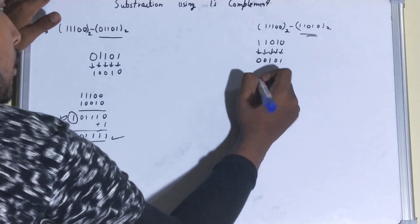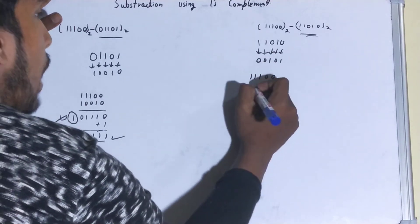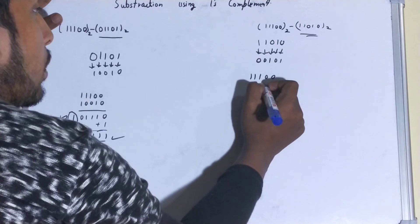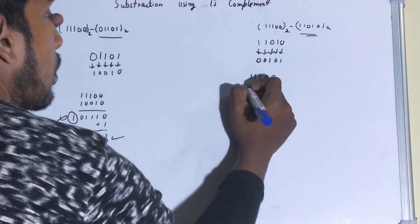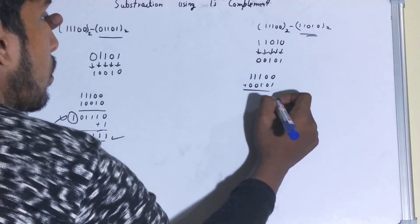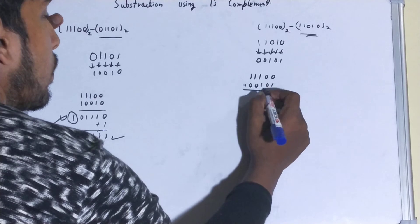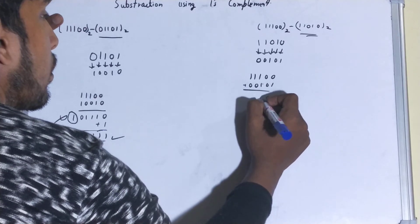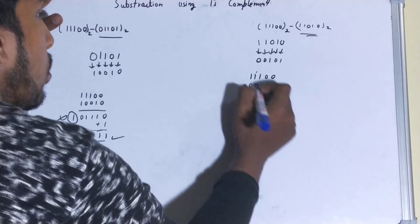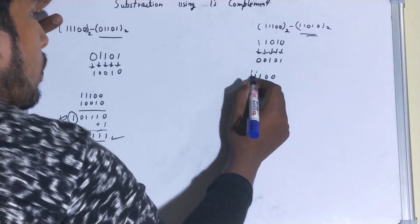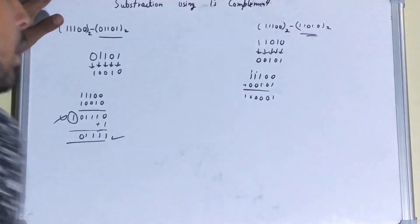Then we add it to the original number. So: 1 + 0 = 1, 1 + 1 = 0 with carry, 1 + 1 = 0 with carry, and 1 + 1 = 0 with carry again. Here also we are getting a carry.